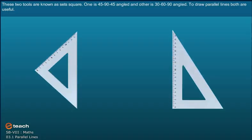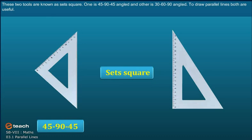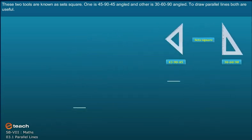These two tools are known as the set square. One is 45, 90, 45 angled and the other is 30, 60, 90 angled. To draw parallel lines, both are useful.